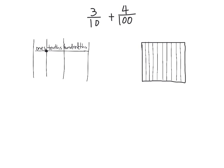Suppose we had three tenths plus four hundredths, and the idea is we want to be able to add these. Just like you could say three dogs plus four cats — you can't really add and get seven dogs or seven cats — you have to find some other label. So there's a variety of ways we can show how to add these two fractions.